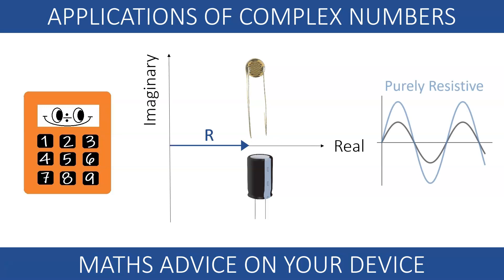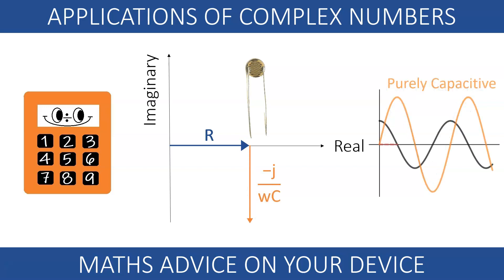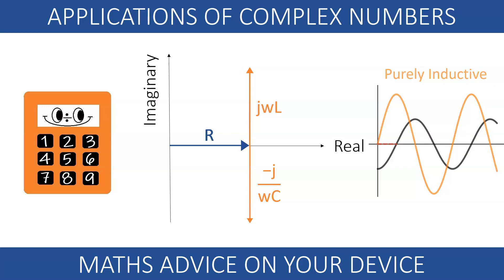In a purely resistive circuit, the voltage and the current are both in phase with each other. In a purely capacitive circuit, the voltage lags the current by 90 degrees. And in a purely inductive circuit, the voltage leads the current by 90 degrees.